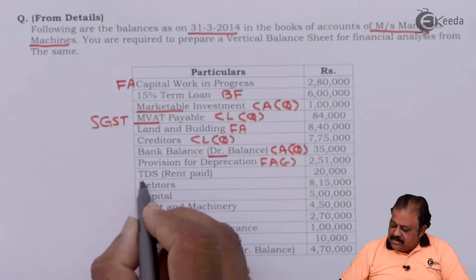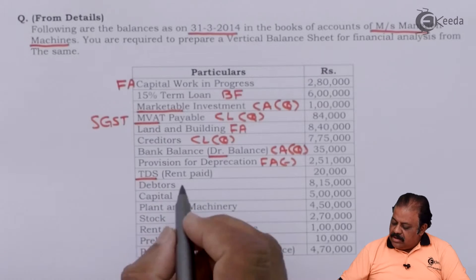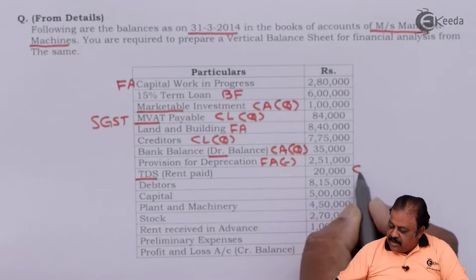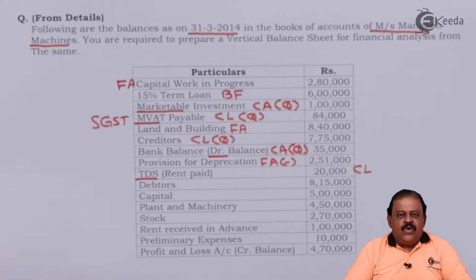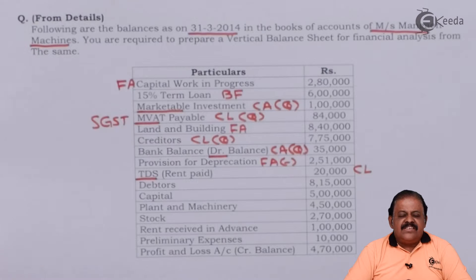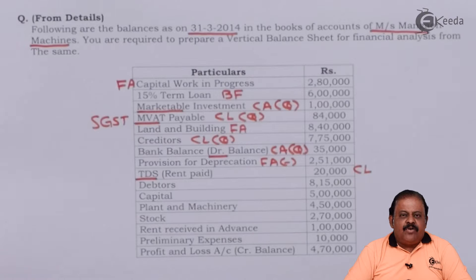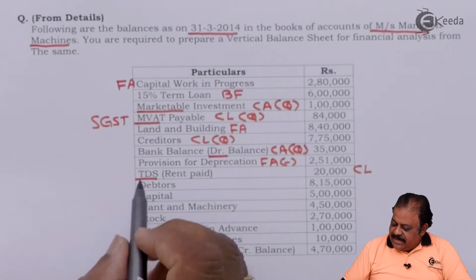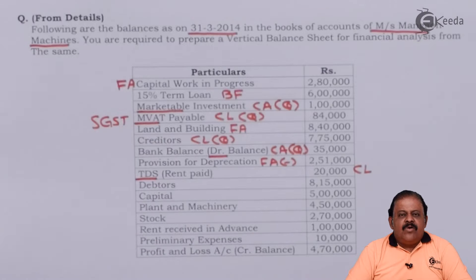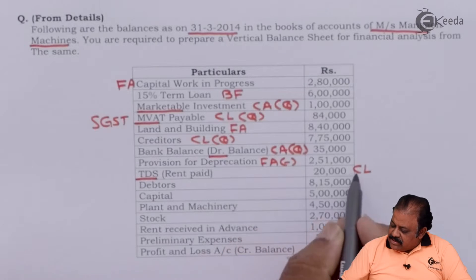TDS — tax deducted at source on rent paid — is 20,000 and will be treated as a current liability. When we pay rent to a landlord and the rent amount is large, the income tax department requires us to deduct income tax on that rent. Since rent is income for the landlord, the government requires the tenant to cut that amount of income tax and deposit it to the government, which is called tax deducted at source. This amount must be paid to the government, so it is a current liability.